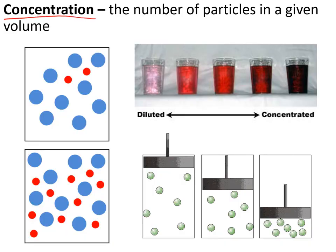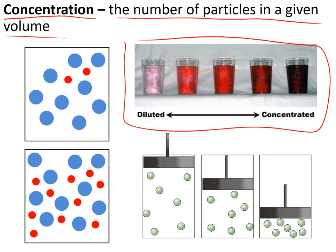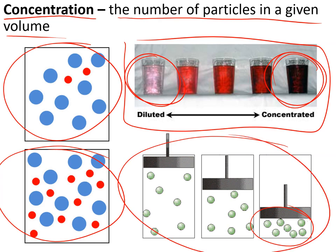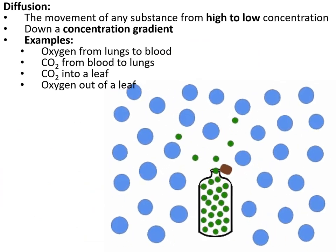To understand how things enter and leave cells, we need to understand concentration — the number of particles in a given volume. A low concentration has fewer particles; a high concentration has more. The concentration of a substance is lower when there are fewer particles, and higher when the same number of particles are in a smaller volume.